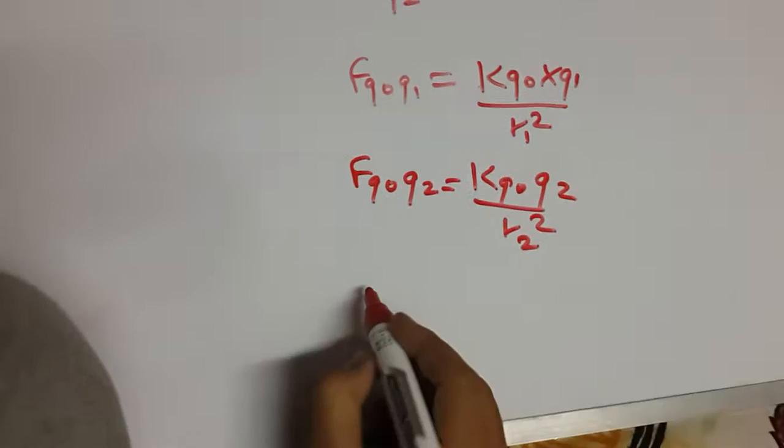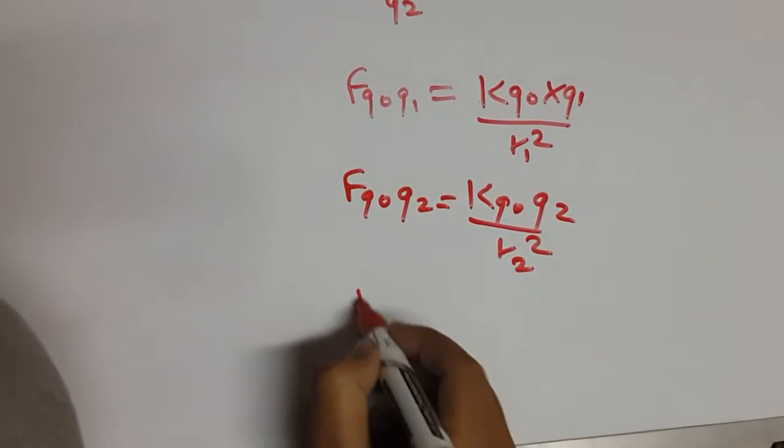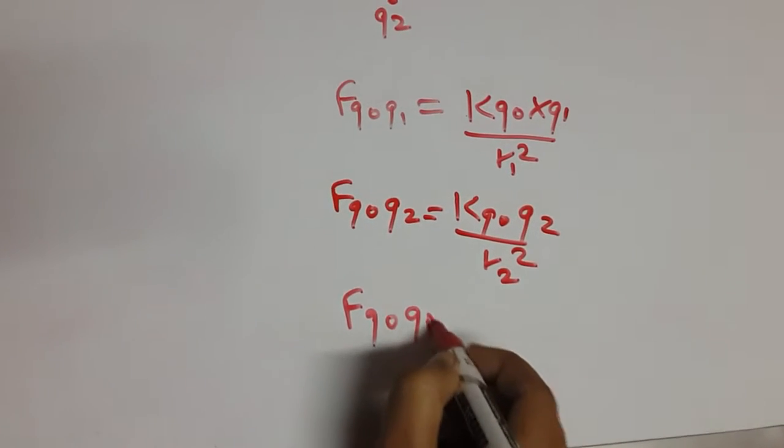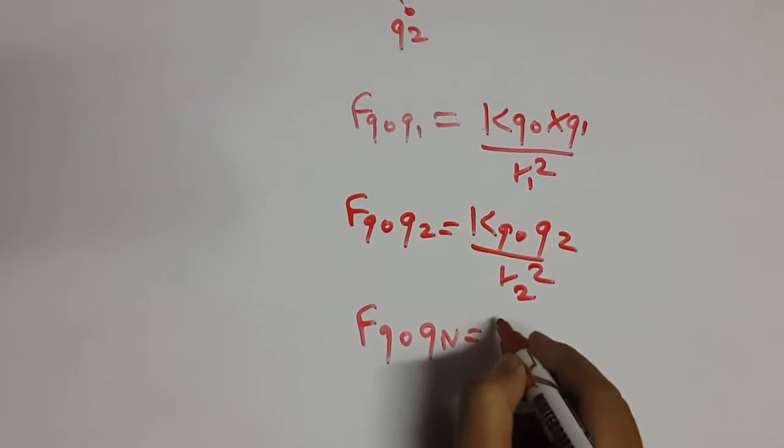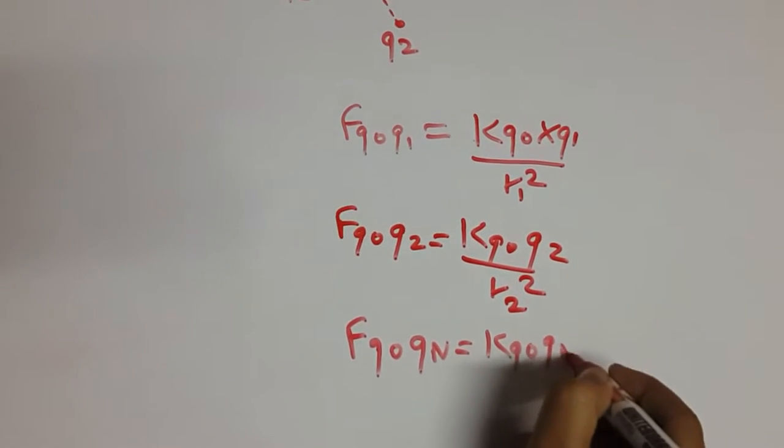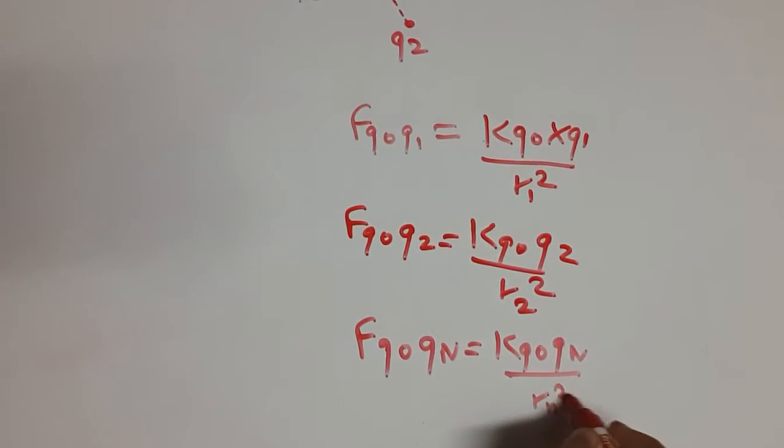It goes till the end q, f q0 qn equals to k q0 qn upon rn square.